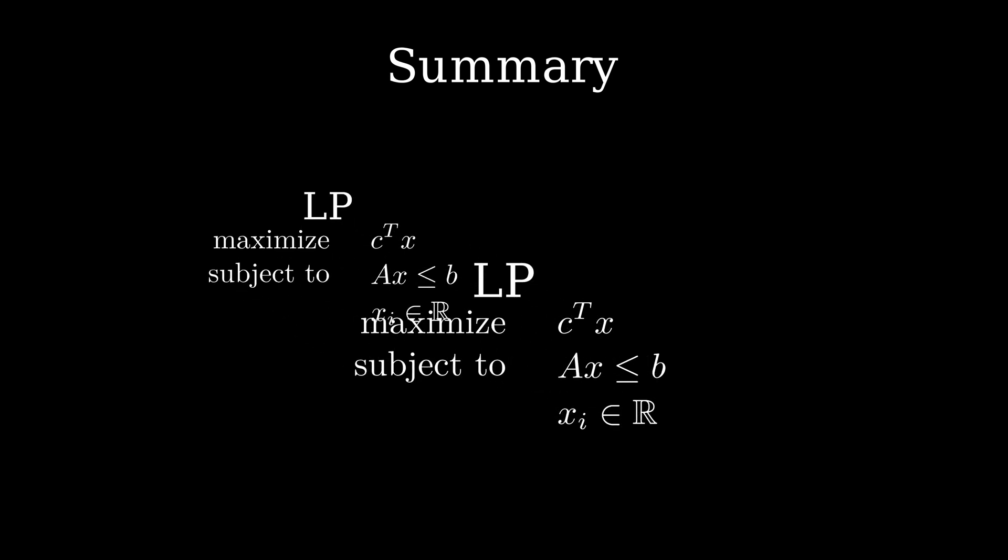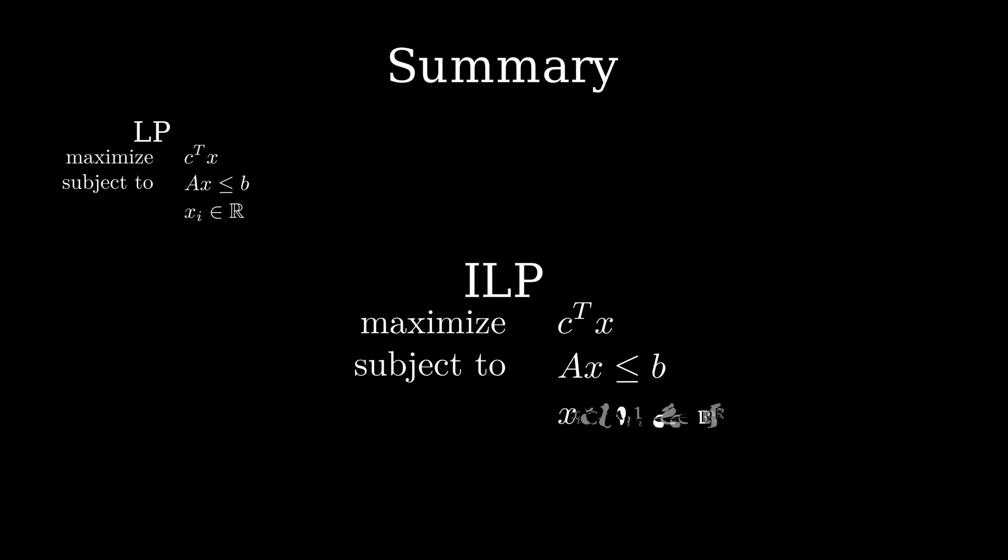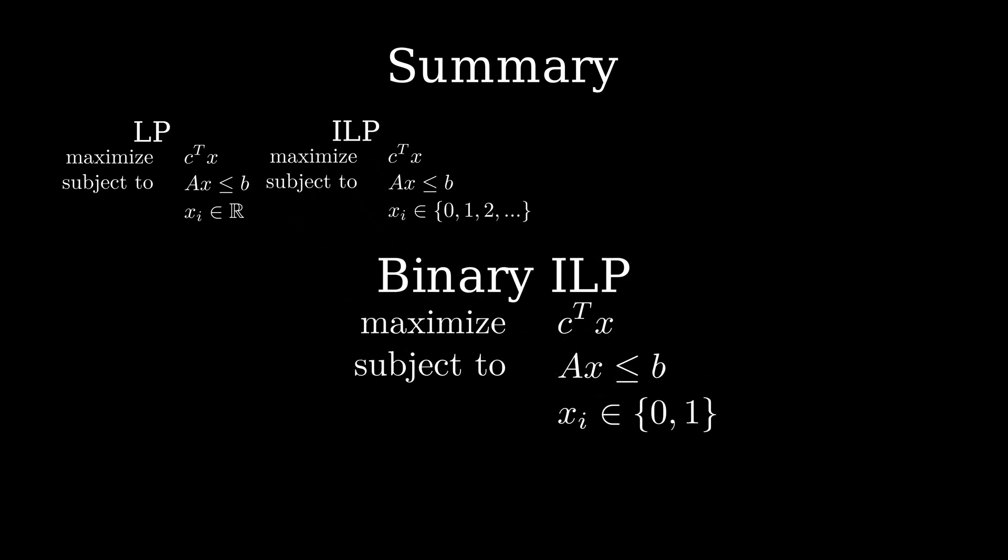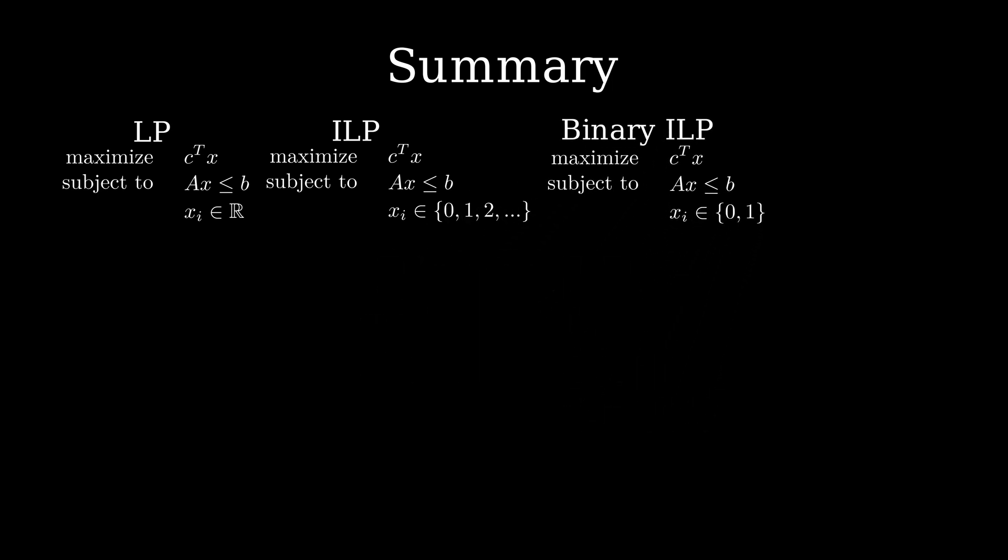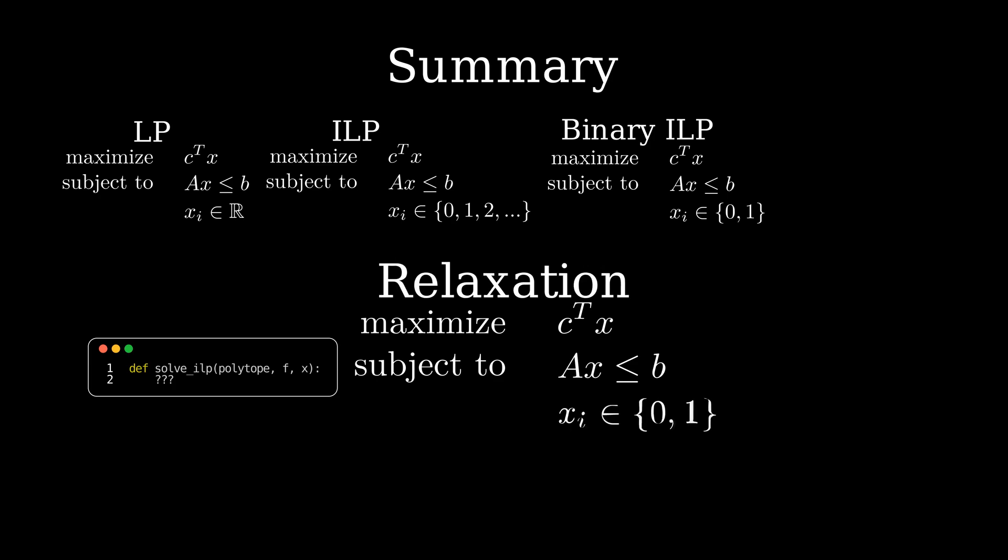Let us summarize what we have seen in this video. We started by introducing integer linear programs in order to solve discrete tasks that require the solutions to be integral instead of fractional. If we only allow indicator variables we call it a binary ILP. Unfortunately we cannot directly solve ILPs efficiently. One approach is to relax the integrality constraint of the variables and only require them to be between zero and one.